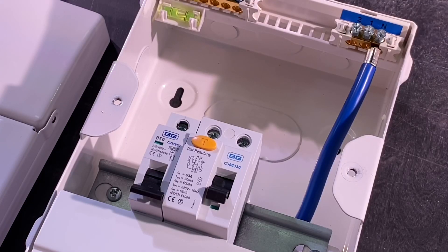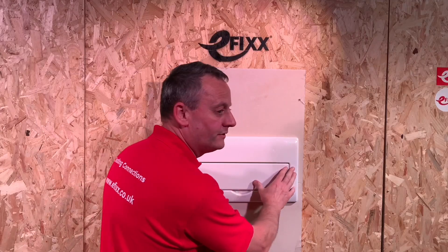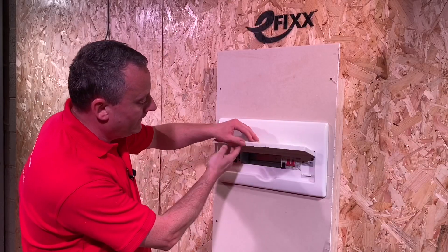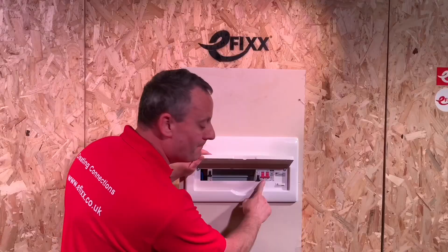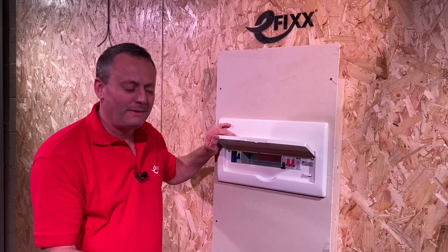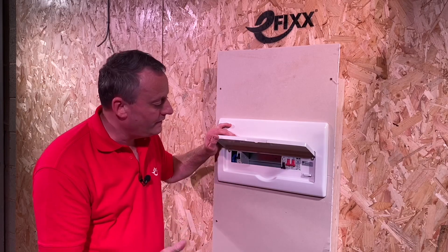Let's move to the recess board next. The build quality from British General continues on with this recessed consumer unit. As I open it up, it's a 10 way, got a 100 amp main switch, probably giving you the ability to fit RCBOs within this type of consumer unit.